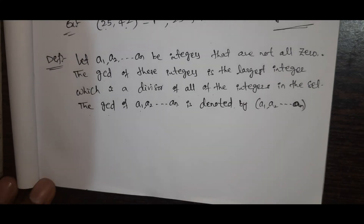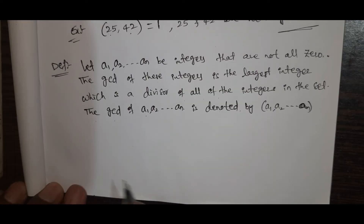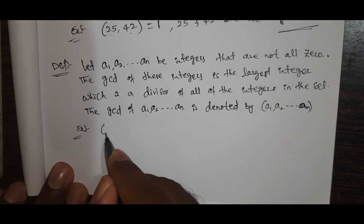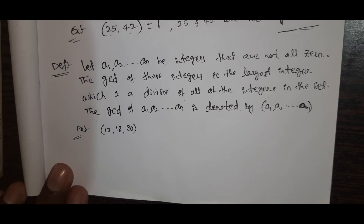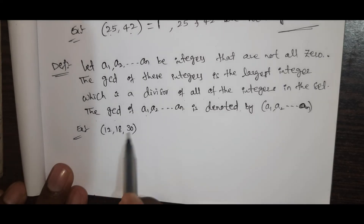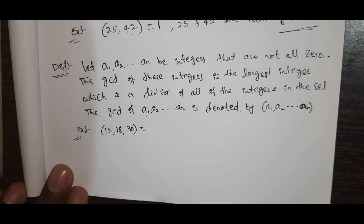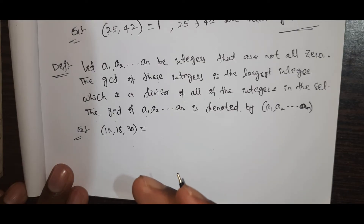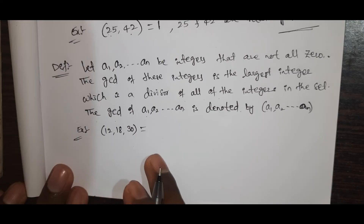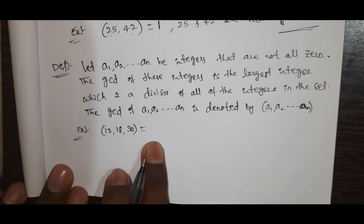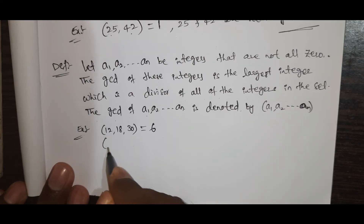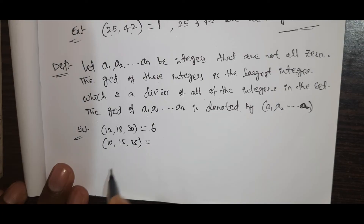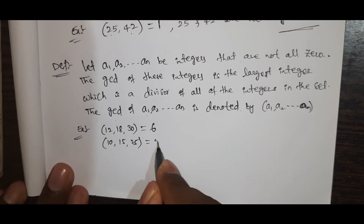This is a little confusing, so let's take an example. First: GCD(12, 18, 30). Here n equals 3. We have three numbers. The common divisors are 1, 2, 3, and 6. So the greatest common divisor is 6. Next: GCD(10, 15, 25). The common divisor is 1 and 5, so GCD equals 5.